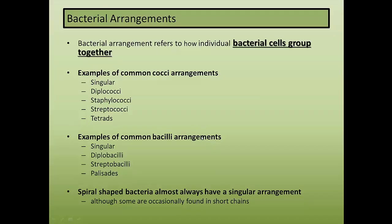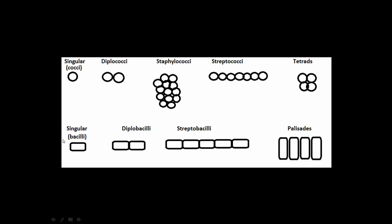Bacilli arrangements are similar but slightly different. You have singular and diplo just like cocci. There is no staphylobacilli discovered yet. What we do see are streptobacilli, which occur in chains. Another arrangement unique to bacilli is called palisades — bacilli that grow side by side as opposed to end to end like in streptobacilli.